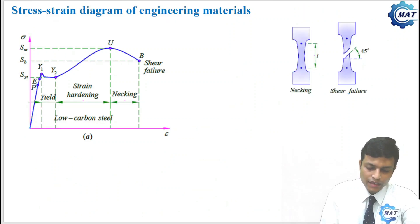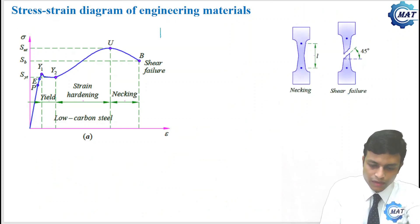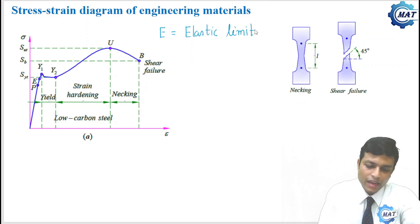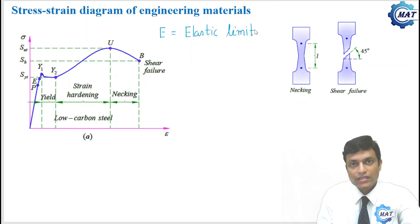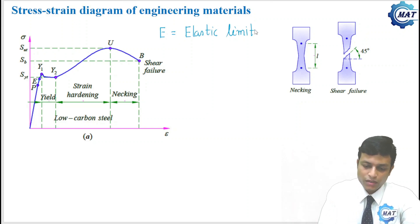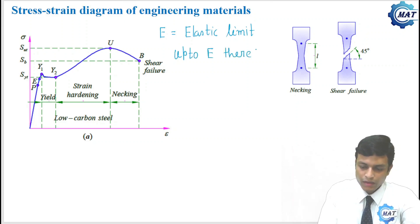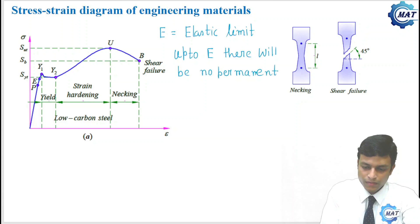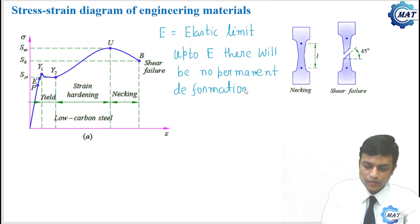The next point is E, the elastic limit. The significance of the elastic limit is that if we load the material up to E and then release the load, there will be no permanent deformation. So up to point E, there will be no permanent deformation.